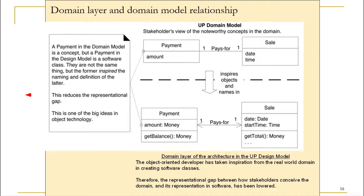This diagram represents the relationship between the domain model and the design model. A concept in the domain model — for example, the concept of Payment — is related to a class in the design model called Payment. The domain model simply has Payment as a concept, whereas the design model has it as a complete class. All concepts in the domain model inspire the objects and names in the design model, reducing the representational gap and helping us map class names to domain concepts.